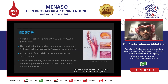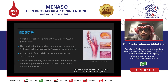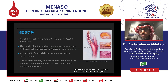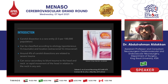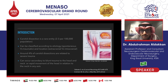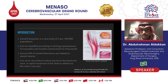Carotid dissection is a rare entity. It affects two to three per hundred thousand population. It can be classified according to the etiology, whether it's spontaneous or traumatic, or according to the location, whether it's extracranial or intracranial, or specifically extradural versus intradural. Around 4% of carotid dissections are related to severe trauma, and it can occur due to blunt trauma to the head or the neck, and any rapid movement in any axis.